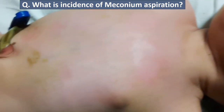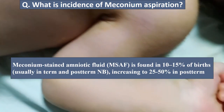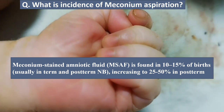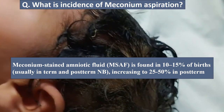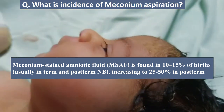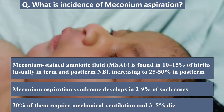What is the incidence of meconium aspiration? Meconium-stained amniotic fluid is found in 10 to 15 percent of births, usually seen in term and post-term newborns, with incidence increasing to 25 to 50 percent in post-term babies. Out of this, 2 to 9 percent of babies develop meconium aspiration syndrome. 30 percent of them require mechanical ventilation and 3 to 5 percent die due to complications.